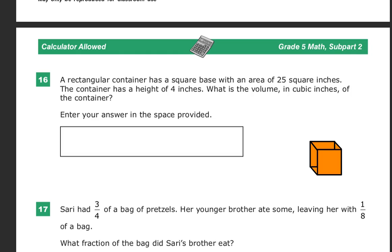Question 16 says, a rectangular container has a square base with an area of 25 square inches. The container has a height of 4 inches. What is the volume in cubic inches of the container?